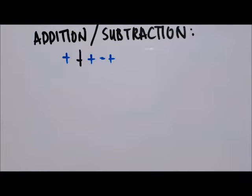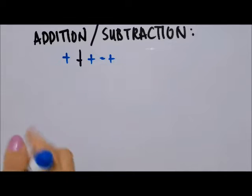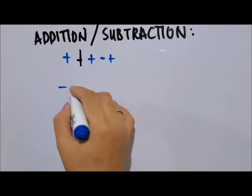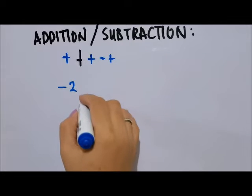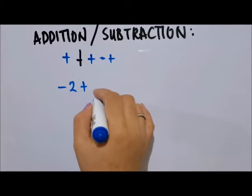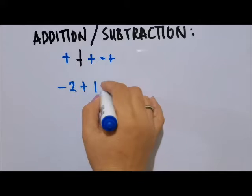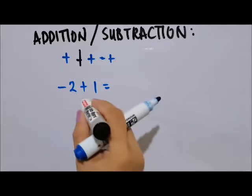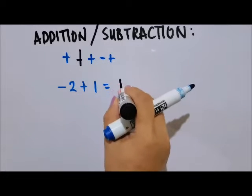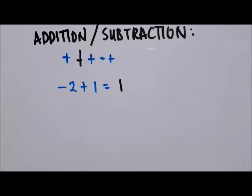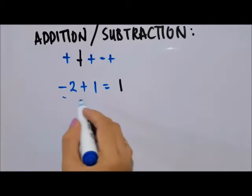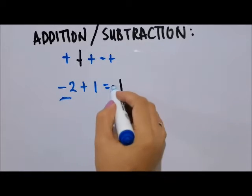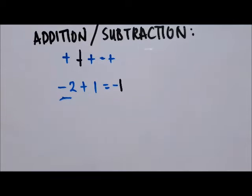If the numbers have different signs — let's say negative 2 plus 1 — subtract the numbers, so 2 minus 1 is 1, and keep the sign of the bigger number. The bigger number is 2, so the sign is negative. So the answer is negative 1.